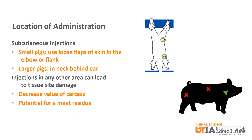For small pigs, subcutaneous injections should be given in the loose flaps of skin in the elbow or the flank. In larger pigs, subcutaneous injections should be given in the neck behind the ear. Administering injections in other areas can lead to tissue site damage, which is cut away during harvesting, decreasing the value of the carcass and increasing the potential for a meat residue.